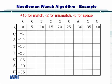In this example, we have two nucleotide sequences: C, T, C, G, C, A, G, C here.